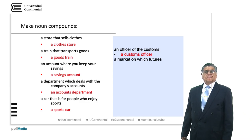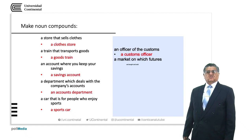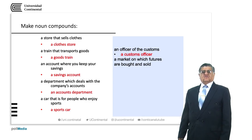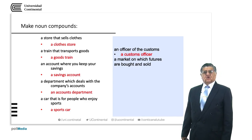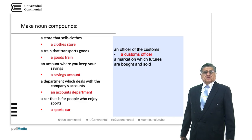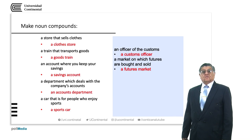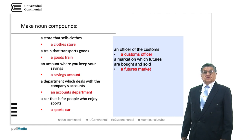A market on which futures are bought and sold: 'a futures market'. This is kind of poetic — a market on which futures are bought and sold. When you go to a fortune teller, they read your future on cards or on a crystal ball. So probably that is a futures market.